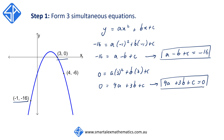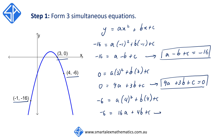Using the other point, 4, negative 16, substituting it back in, we're going to get negative 6 is equal to a times 4 squared plus b times 4 plus c. So we're going to get minus 6 is equal to 16a plus 4b plus c. This is our third equation: 16a plus 4b plus c is equal to minus 6.